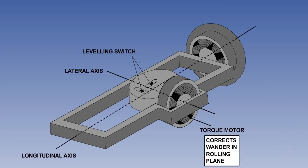If a levelling switch is not level, the mercury will move to close the electrical circuit, which will drive its associated torque motor. Because of the 90 degrees precession rule, the torque motor on the inner gimbal corrects wander in the rolling plane — applying torque around the lateral axis to produce rotation around the longitudinal axis.